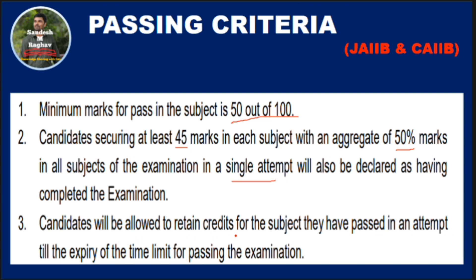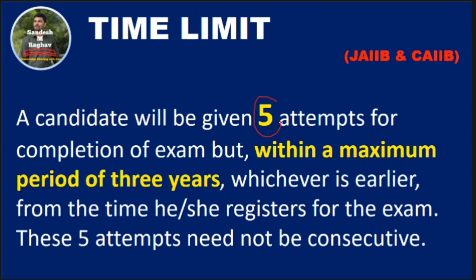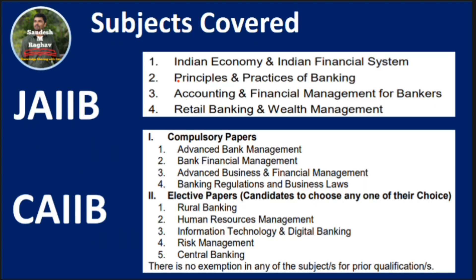Candidates will be allowed to retain credits. You will get a maximum of 5 attempts within a period of 3 years — whichever is earlier. For example, in JAIIB with 4 subjects, if you cleared the first two subjects in the first attempt, in the second attempt you need to attend only the remaining two subjects. If you do not clear within 5 attempts or 3 years, you need to register again and start from the beginning.